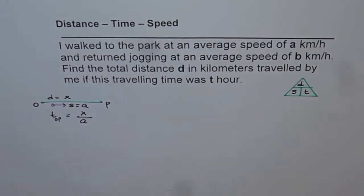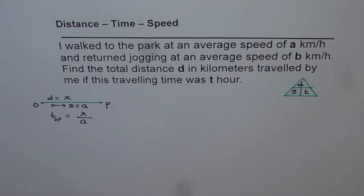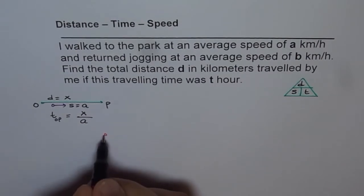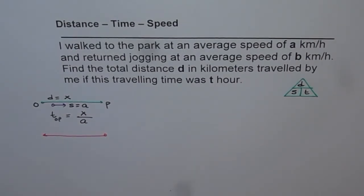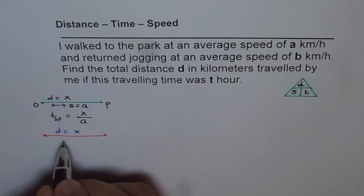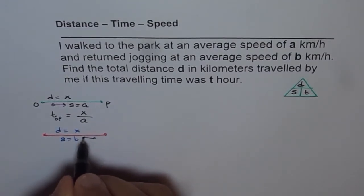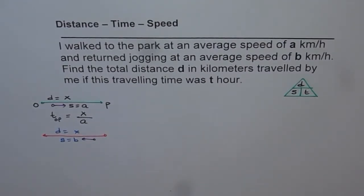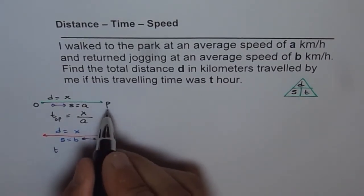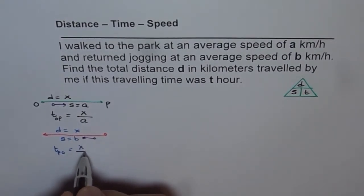That is the time taken to reach from the originating point to the park. Now the return journey is from P back to O — same distance X, but the speed here is B, which is different. So the time taken to return from P to O is distance divided by speed, which is X divided by B.